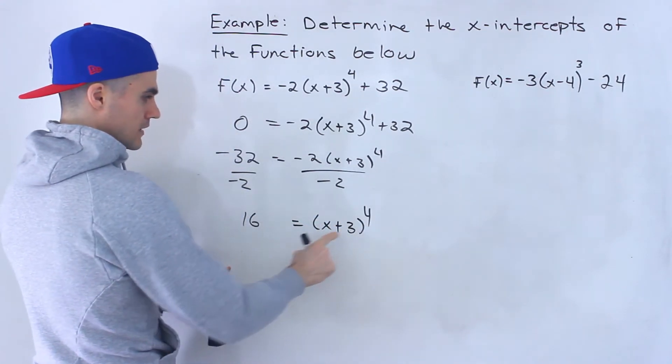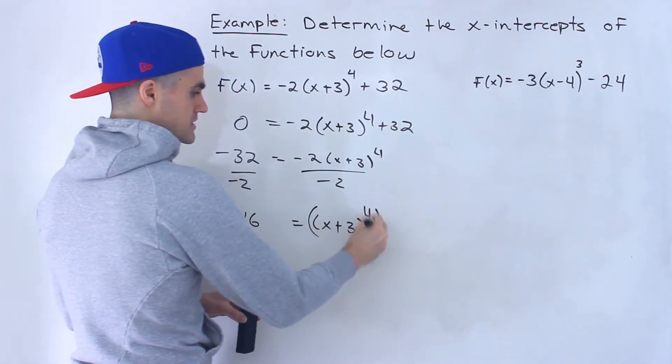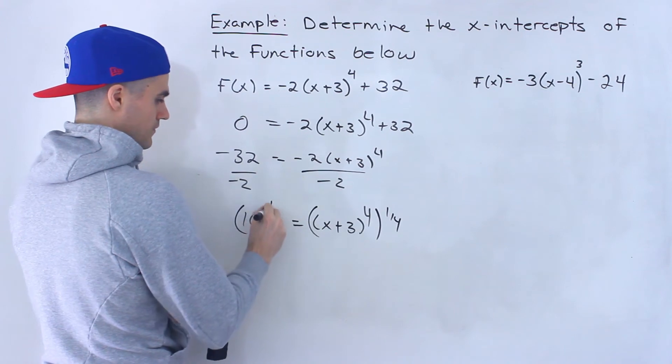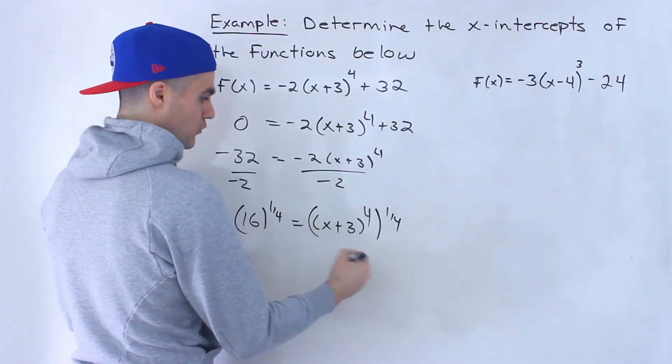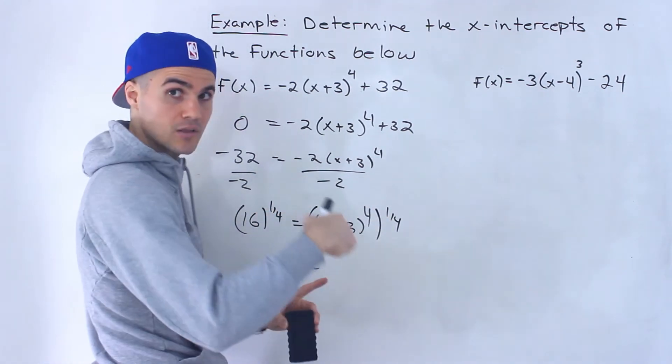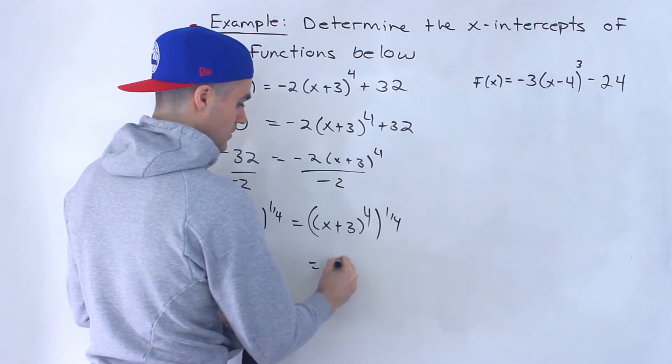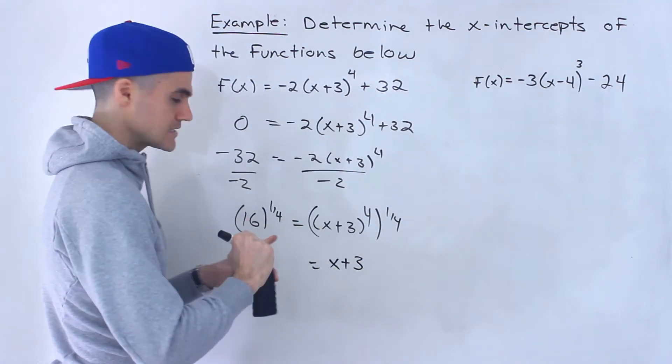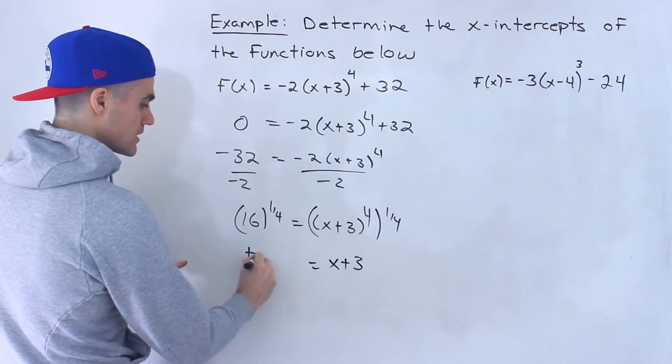And then what we do to get rid of this 4, we could take both sides to the power of 1/4, to the power of the reciprocal. 4 times 1/4 is just 1, so we'd have (x+3)^1, which is just x+3. And then 16^(1/4) is like the fourth root of 16, which is plus or minus 2.